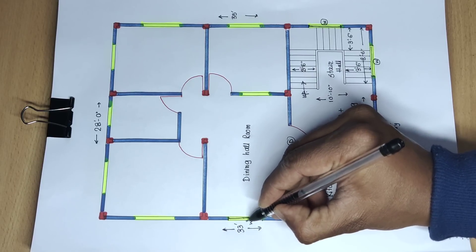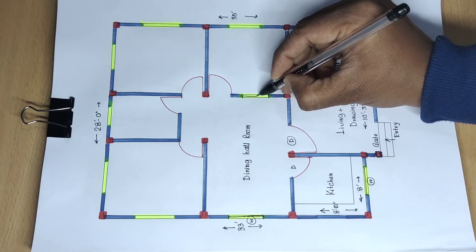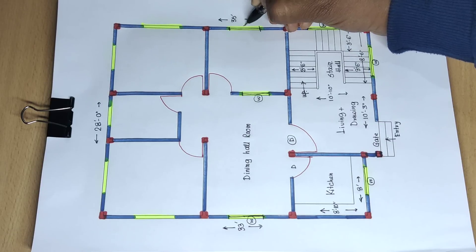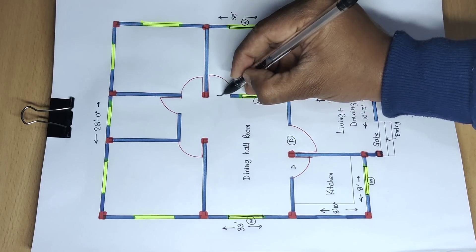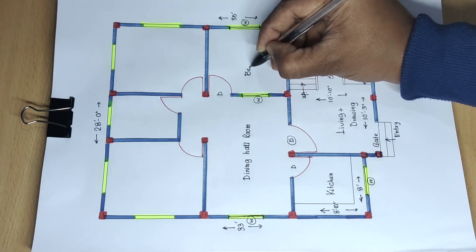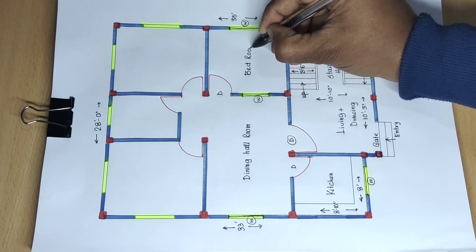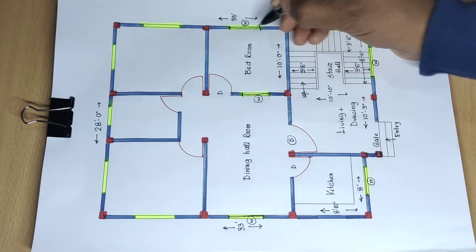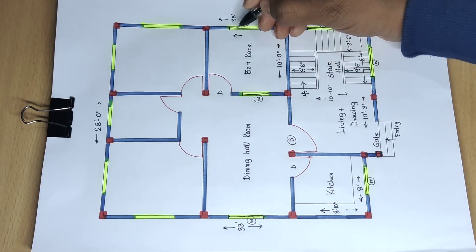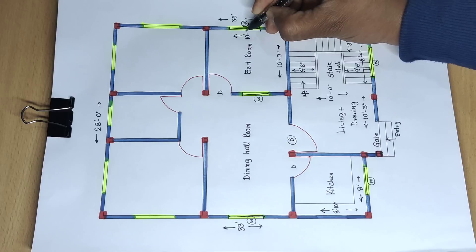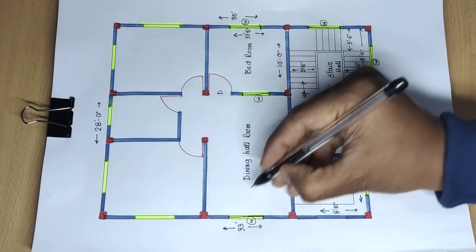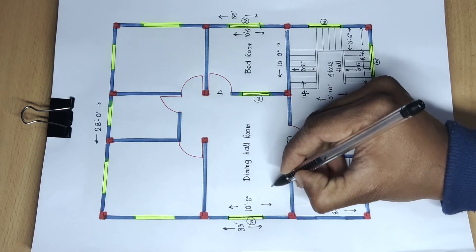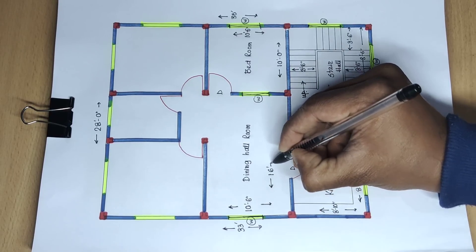This side has a window. Here's the door - this is a bedroom. Distance is 10 feet 0 inch, this side is 10 feet 6 inch, and this side is 16 feet 9 inch.